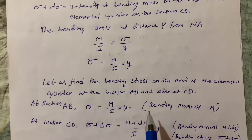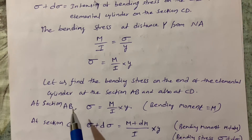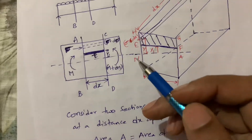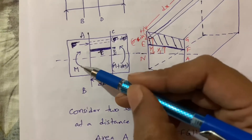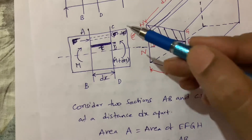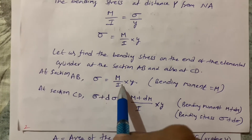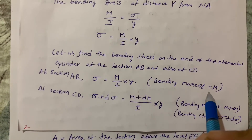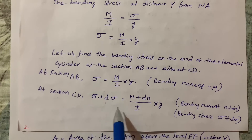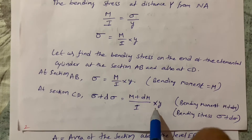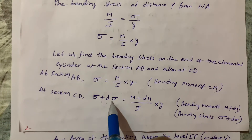When we are considering at section AB, the bending moment is M, so sigma equals M by I into Y. At section CD, the bending moment is M plus DM, so sigma plus D sigma equals M plus DM by I into Y.